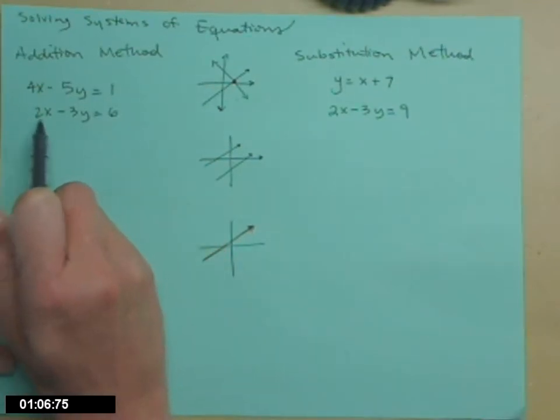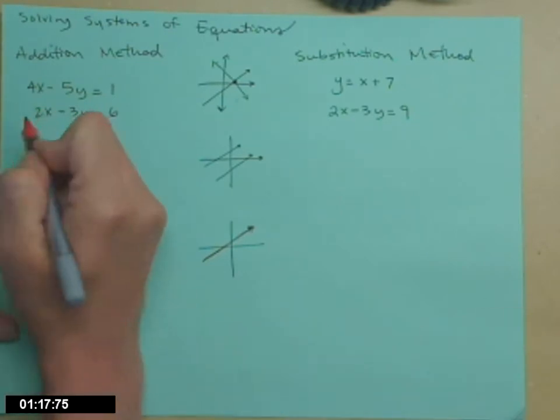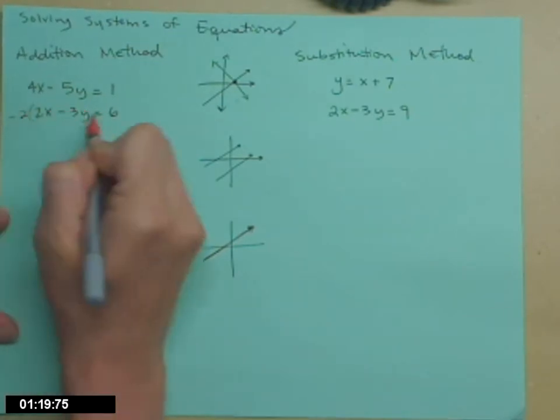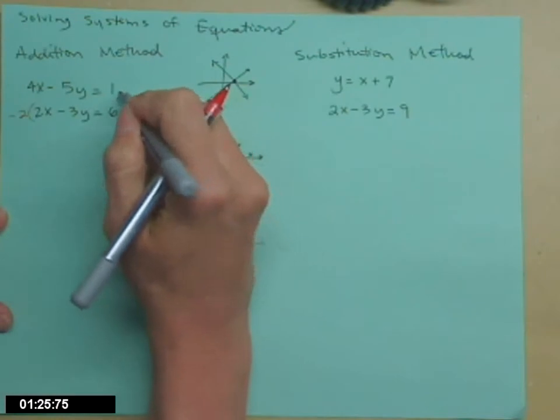it will have a coefficient of negative 4x, which is exactly the same as the top one but opposite in sign. So I'm going to do that. I'm going to take that bottom equation and multiply it by negative 2. The top equation I'm going to leave the same.